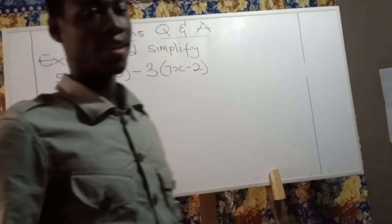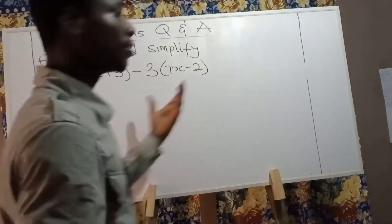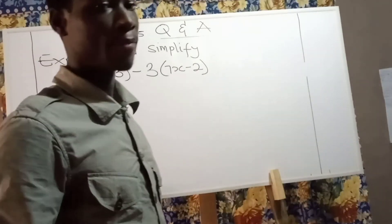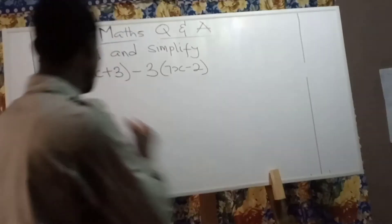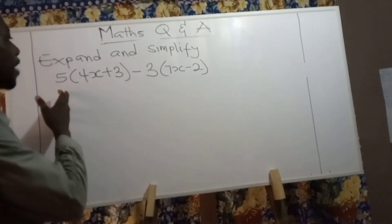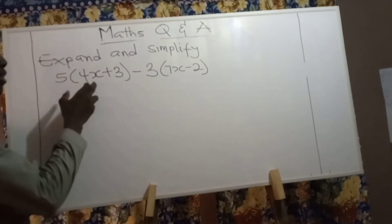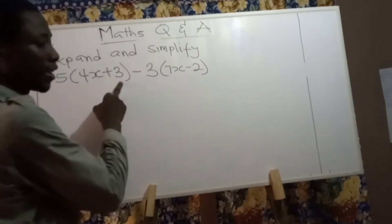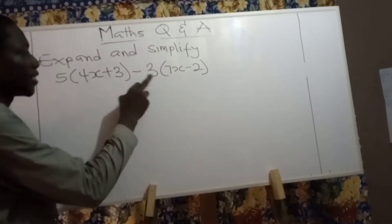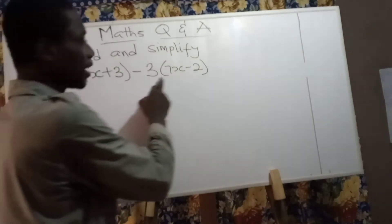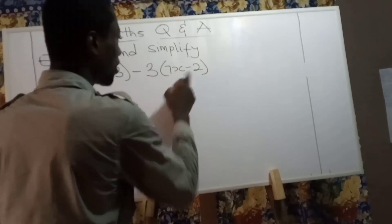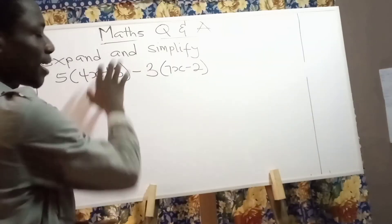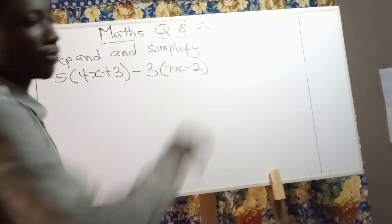Welcome back. The question given to you to try was: 5 multiplying 4x plus 3, minus 3 multiplying 7x minus 2. We have to expand and simplify.